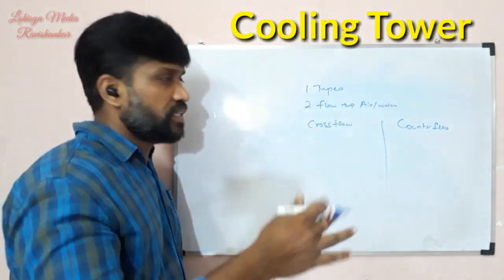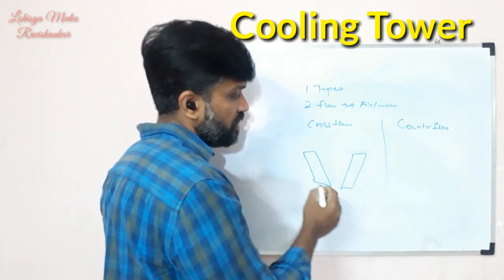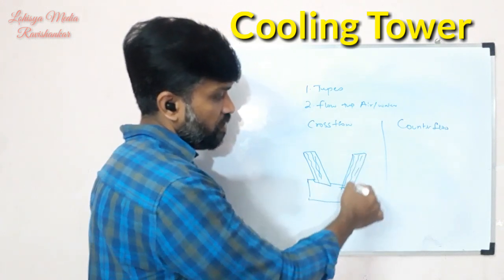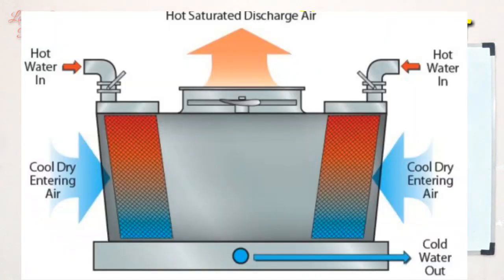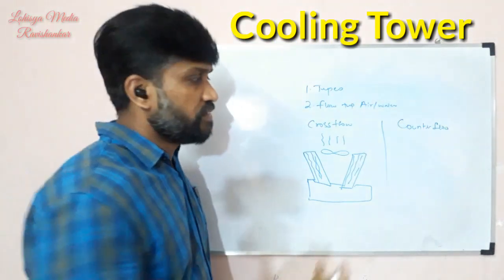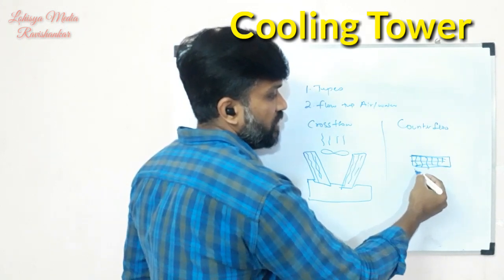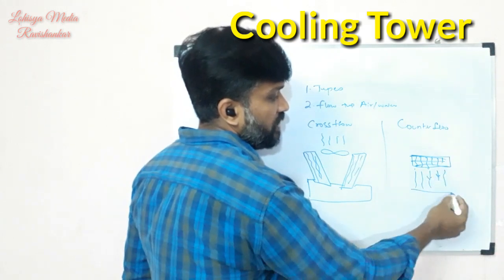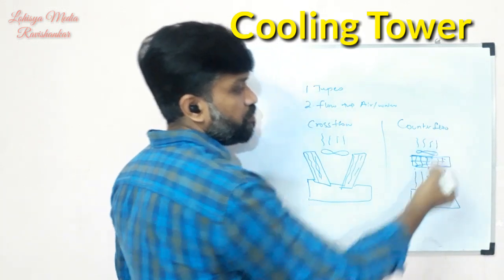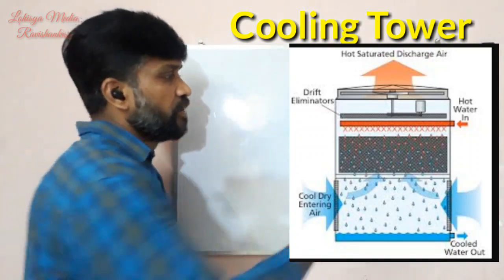In cross flow cooling towers, water flows horizontally across the airstream. There is a fill, a water basin, a fan, and a distribution system. In counter flow cooling towers, water flows downward against the upward airflow. The filter, water tank, and fan are also part of the counter flow design. These are the cross flow and counter flow cooling tower configurations.